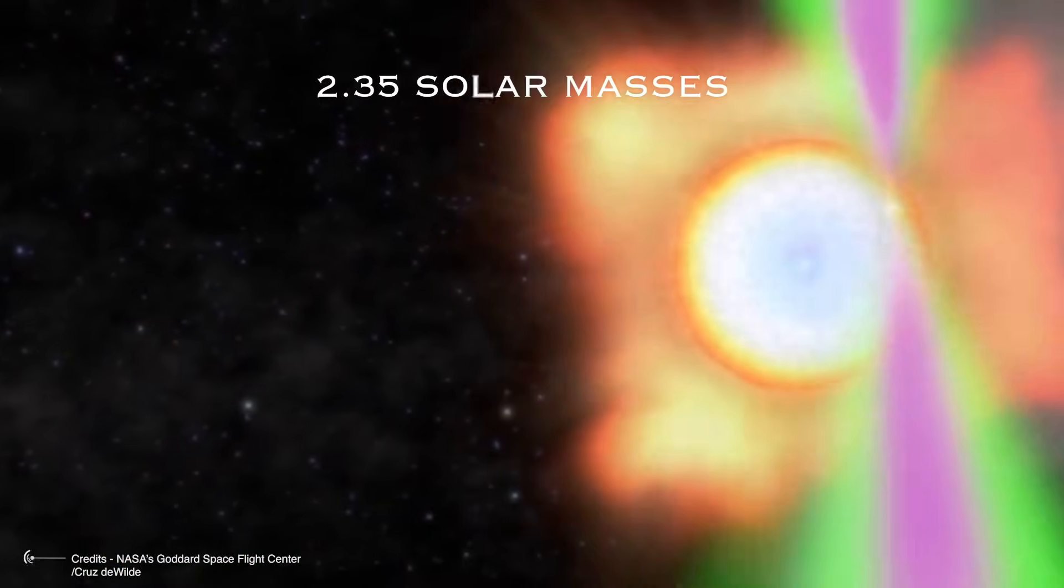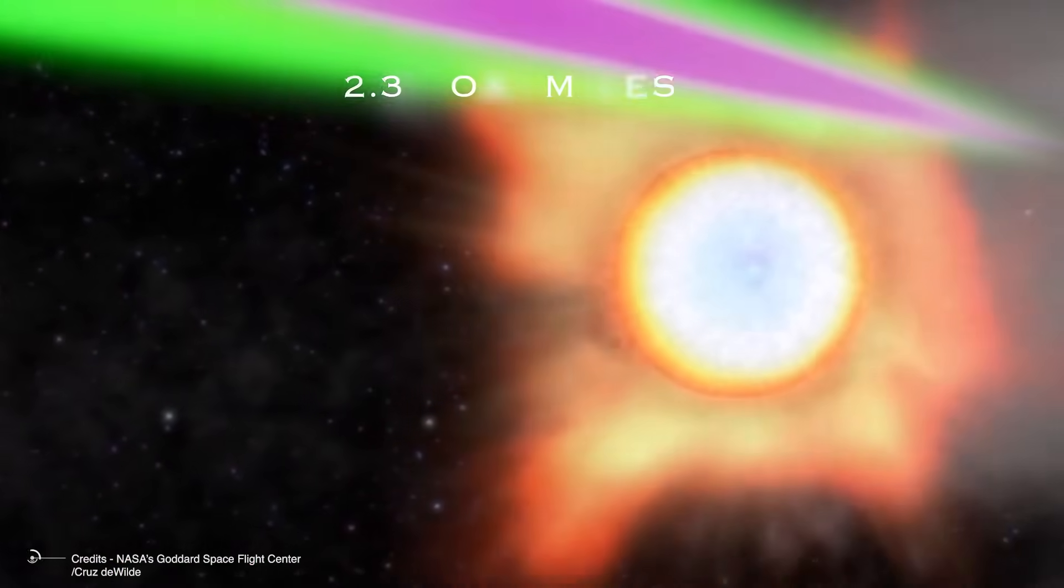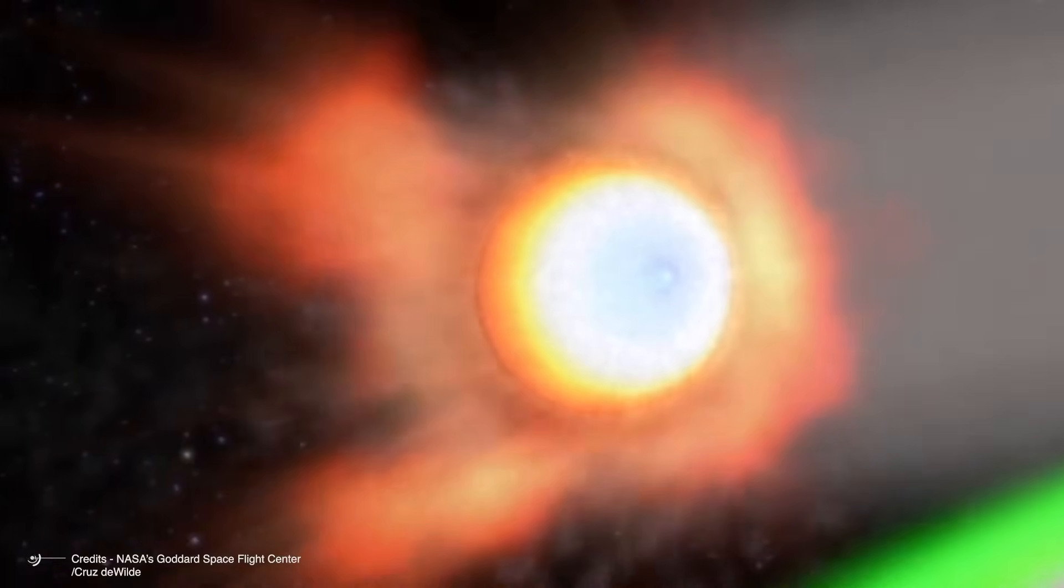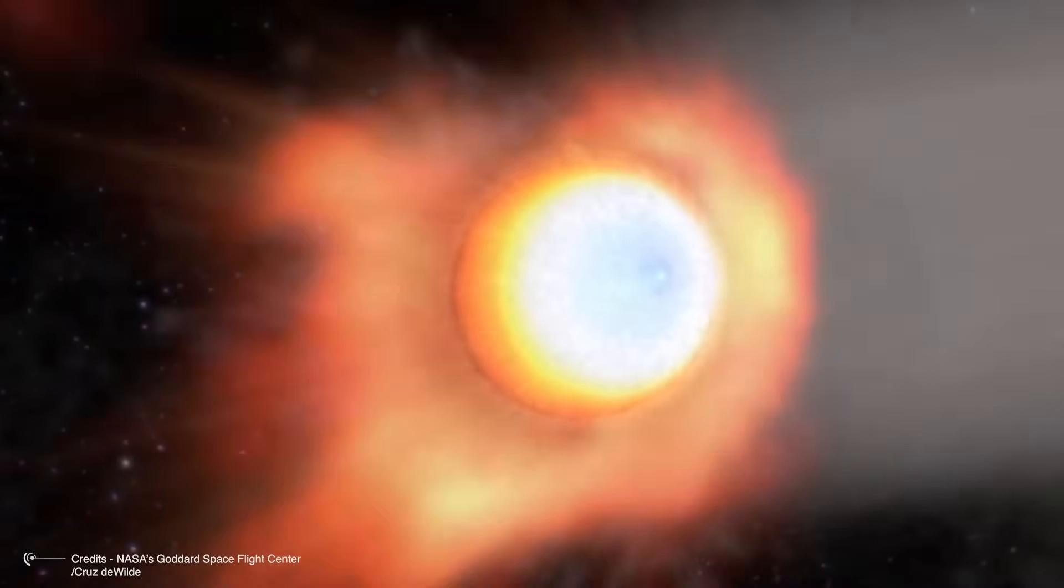But at 2.35 solar masses, J0952-0607 is already teetering on the edge, with each additional fraction of mass from its companion pushing it closer to the breaking point.